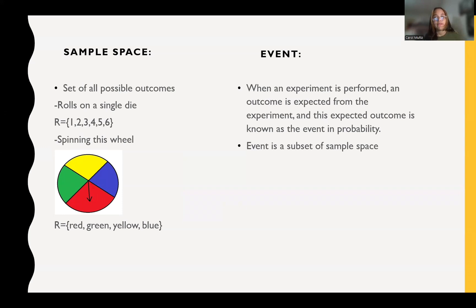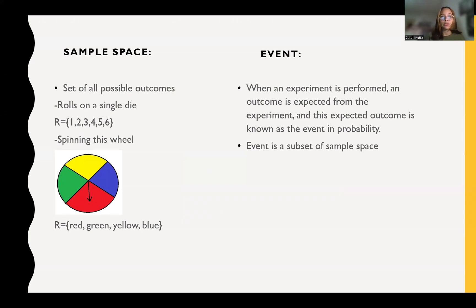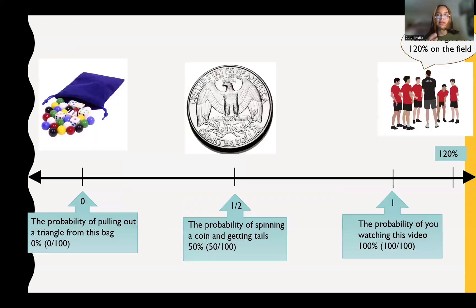When we're talking about an event, we're referring to when an experiment is performed, an outcome is expected from that experiment, and this expected outcome is what we're referring to as the event. An event is a subset of the sample space, so our event comes from our sample space.